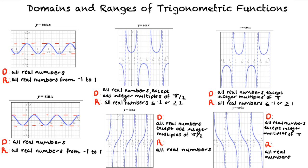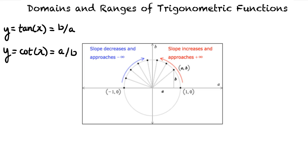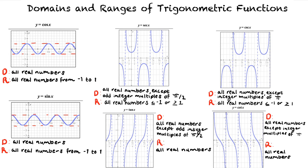To determine the range of cotangent of x, we consider the reciprocal of each real number from the range of tangent of x except 0, giving all real numbers except 0. Furthermore, when x is an odd integer multiple of pi over 2, cotangent of x equals plus or minus 0 divided by 1, which equals 0. Thus, the range of y equals the cotangent of x is the set of all real numbers.